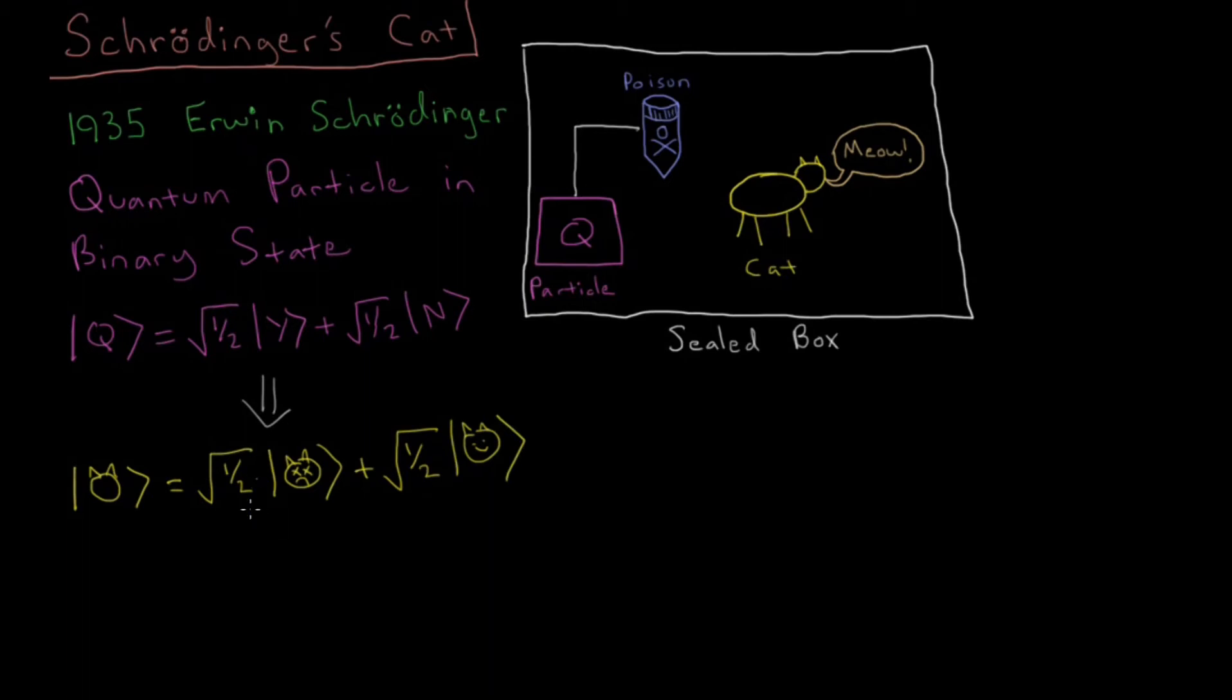Now, Schrödinger used this to devise this situation to show that it's completely ridiculous to describe a cat as half alive and half dead, that the cat is both alive and dead until we open the box. Obviously, inside the box, the cat must be either alive or dead. We just can't know which one it is until we get in there.